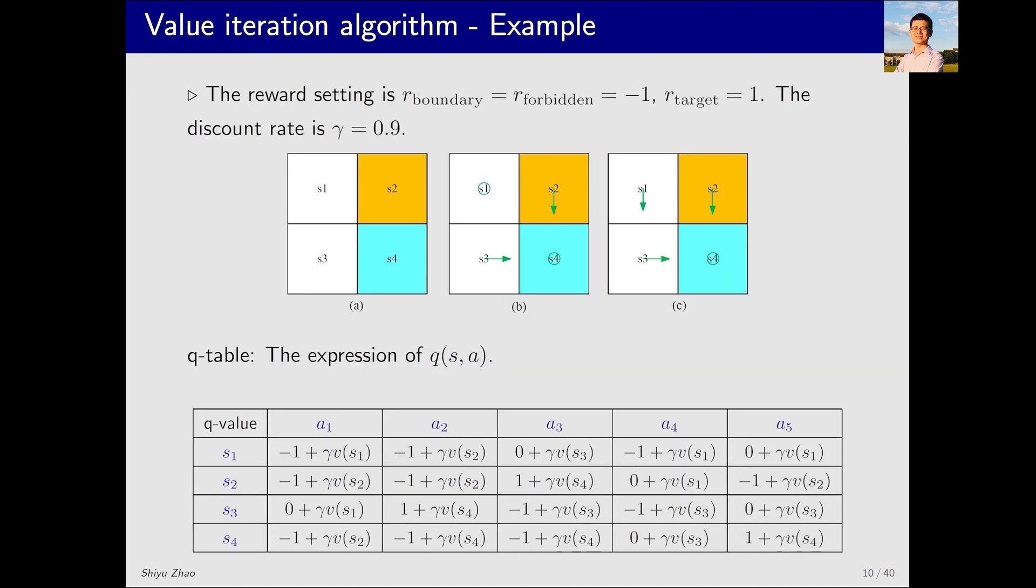Now, let's use an example to demonstrate how to apply this algorithm. Here is a forbidden area, and this is the target area. Our task is to find an optimal policy using the value iteration algorithm we just introduced. There are some basic settings for this example.